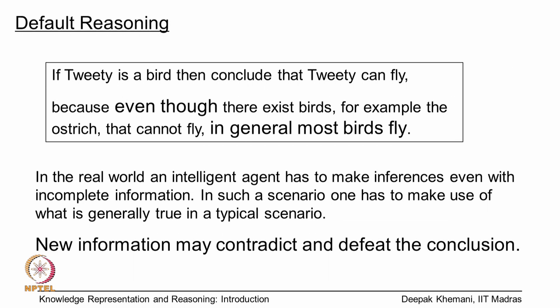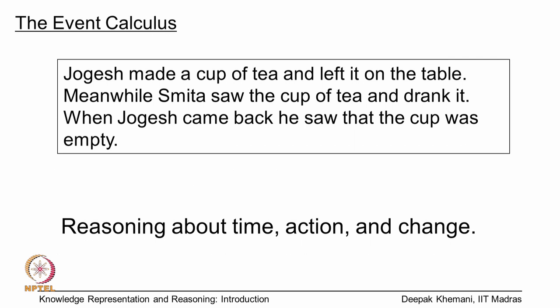We also look at something called default reasoning, which says that if Tweety is a bird, then conclude that Tweety can fly. This may not necessarily be true because not all birds fly, but we think that generally birds fly and therefore we should be allowed to make such an inference. This inference may later be contradicted by new facts which emerge, and this is in the area of default reasoning.